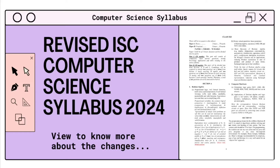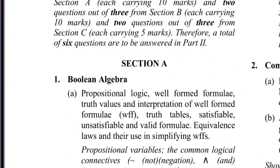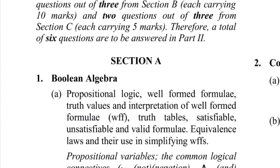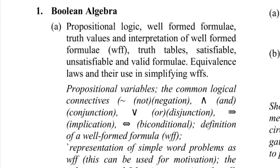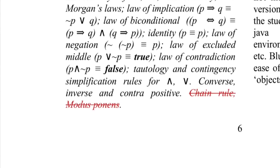However, major changes have been made in section C. This means that students will have less material to cover, which will give them more time to focus on the other important concepts. Let's go through the changes one by one. The first change is in the Boolean algebra of section A, and here the change is that chain rule and modus ponens has been removed. This is the only change in section A.